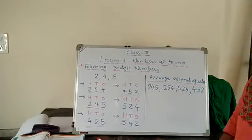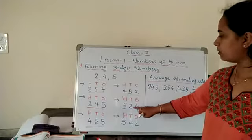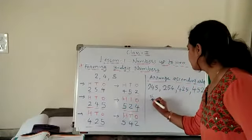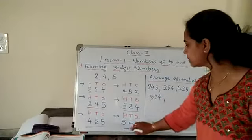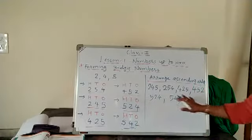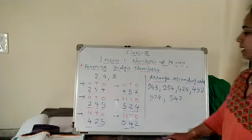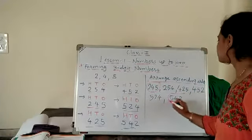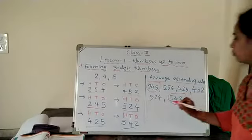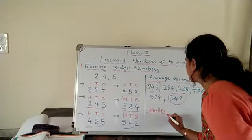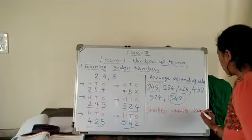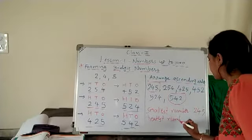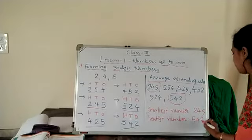And the last is 542. This is ascending order. Now in this ascending order, the first one is the smallest number and the last one is the greatest number. So it's easy for you — the smallest number is 245 and the greatest number is 542.